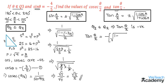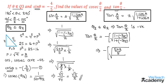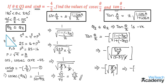So tan theta by 2 equals minus of under root of 1 minus cos theta over 1 plus cos theta, which gives minus under root of 1 minus (minus 3 by 5) divided by 1 plus (minus 3 by 5). Simplifying with LCM 5: numerator becomes 5 plus 3 equals 8, denominator becomes 5 minus 3 equals 2. The 5s cancel, leaving minus under root of 8 by 2, which simplifies to minus under root of 4, giving minus 2. So tan theta by 2 equals minus 2.